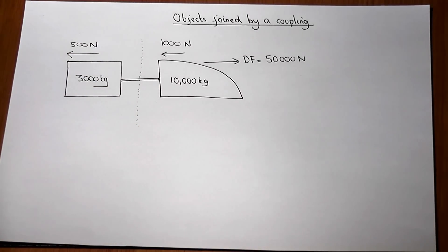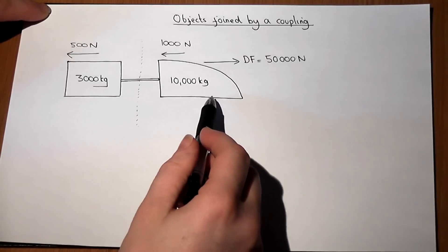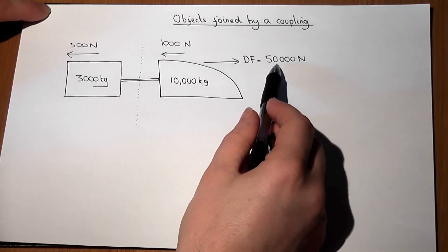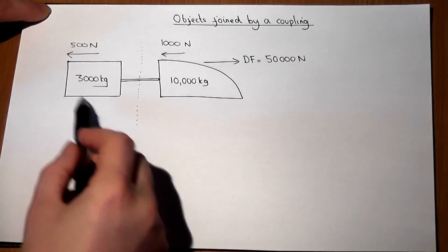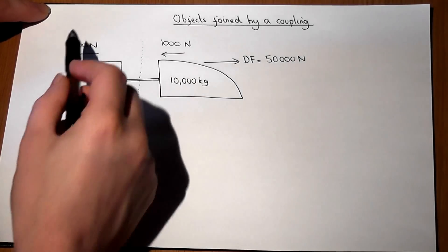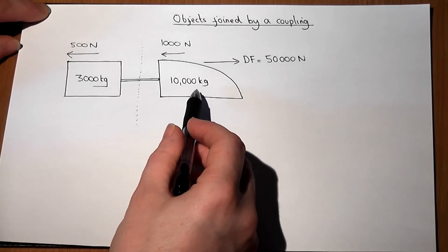This video looks briefly at two objects, in this case an engine with a driving force of 50,000 newtons and a resistance of 1,000 newtons and some sort of trailer which has a resistance force of 500 newtons joined by a coupling.